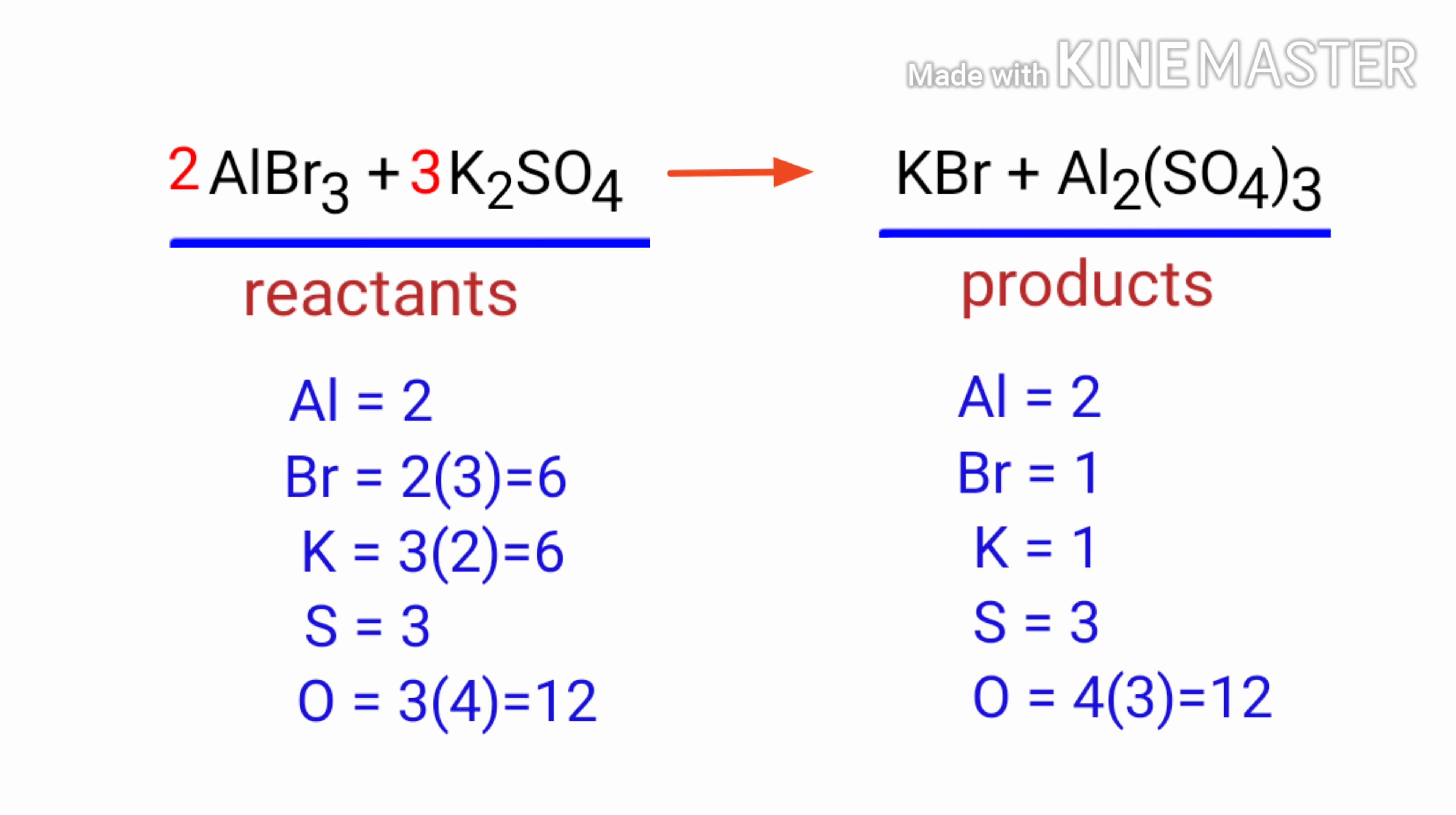Now we need to balance the potassium and bromine atoms. To do this, we need to put a coefficient of 6 in front of KBr.